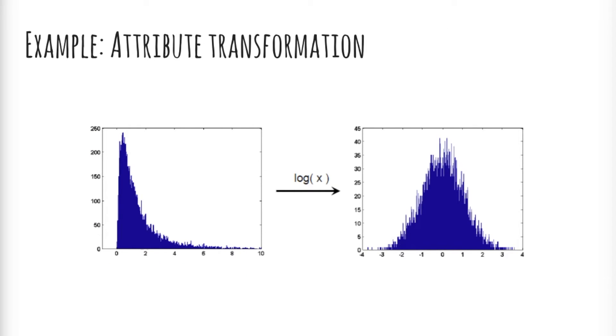Simple functions as x to the k, log x, e to the x are often used to make the data more like some standard distribution to better satisfy assumptions of a particular algorithm. For example, discriminant analysis explicitly models each class distribution as a multivariate Gaussian.